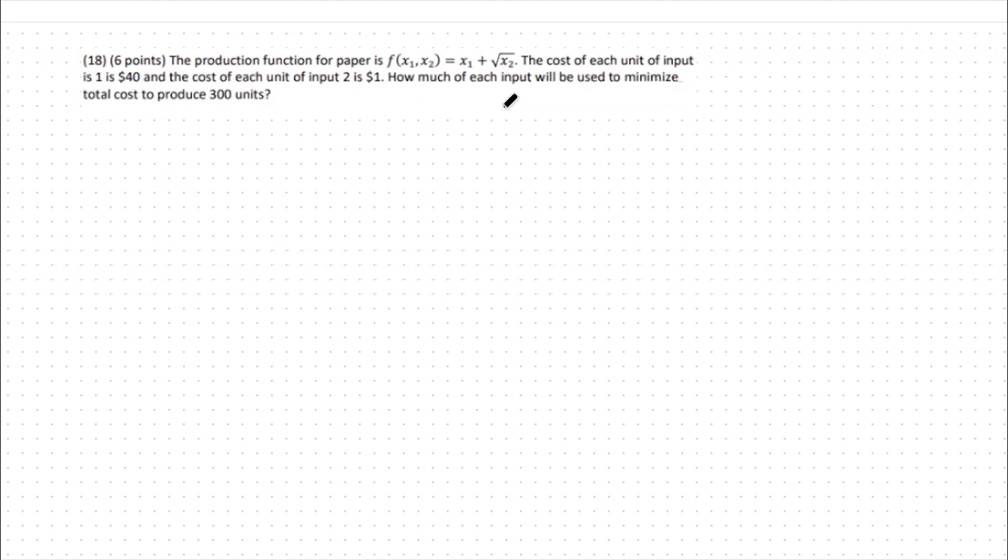The difference here is we're looking at production functions instead. Production functions give us an exact output given that we use a certain amount of input 1 or x1 and input 2 or x2. In this case, if we were to use 10 units of input 1 and 100 units of input 2, we would get out 20 units to be sold. That's a tangible number that means something on its own.